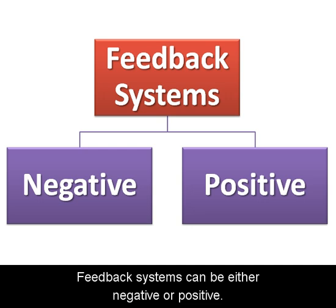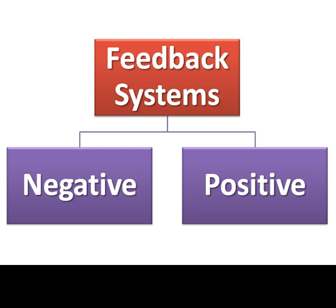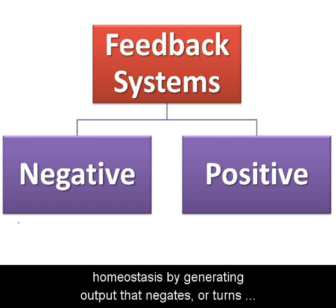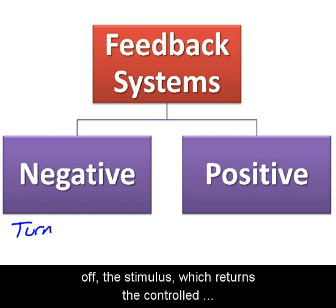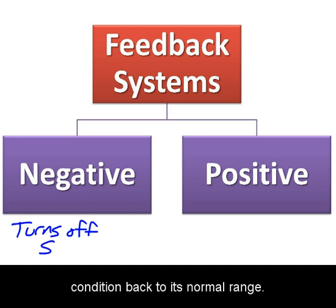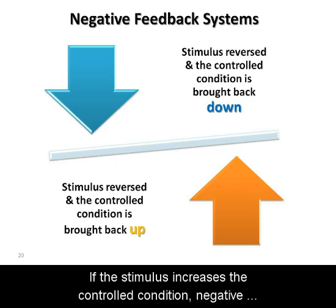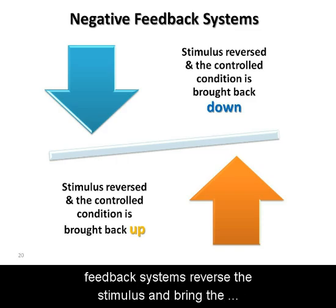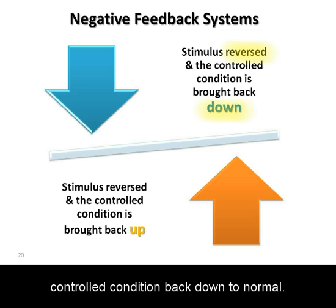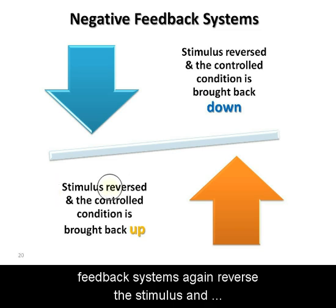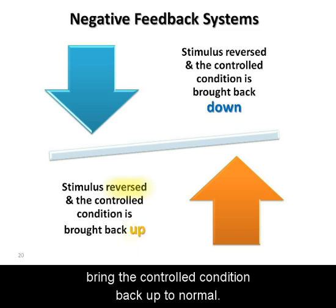Feedback systems can be either negative or positive. Negative feedback systems work at maintaining homeostasis by generating output that negates, or turns off, the stimulus, which returns the controlled condition back to its normal range. If the stimulus increases the controlled condition, negative feedback systems reverse the stimulus and bring the controlled condition back down to normal. If the stimulus decreases the controlled condition, negative feedback systems again reverse the stimulus and bring the controlled condition back up to normal.